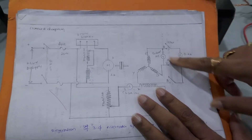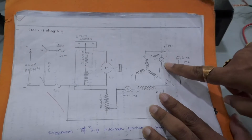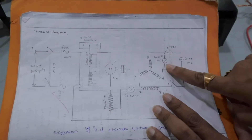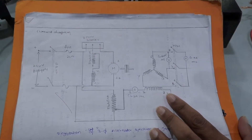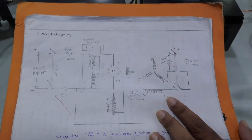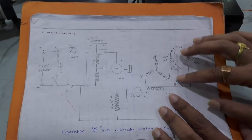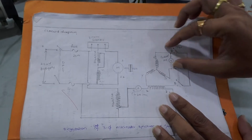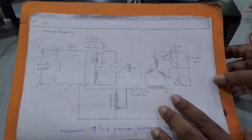First we are going to do the open circuit test and take the values up to the rated voltage. Next we are going to do the short circuit test and take the values up to the rated current.